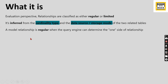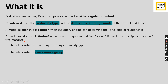A model relationship is regular when the query engine can determine the one side of a relationship. A model relationship is limited when there is no guarantee of a one side — this happens for two reasons: either it is a many-to-many cardinality type, or it is a cross source group relationship.